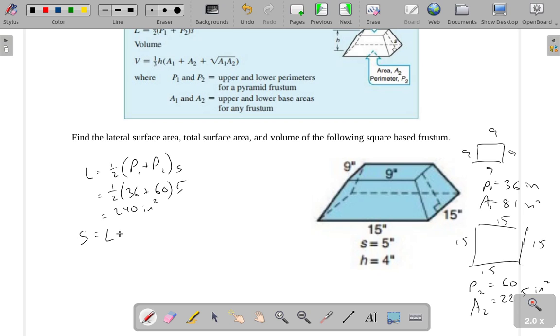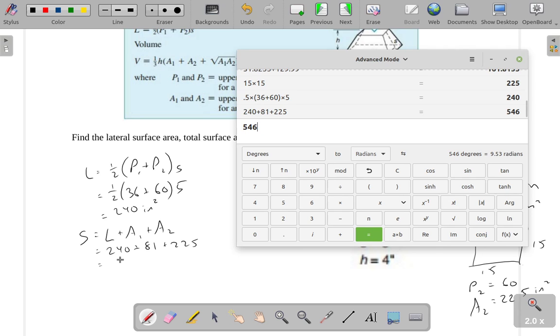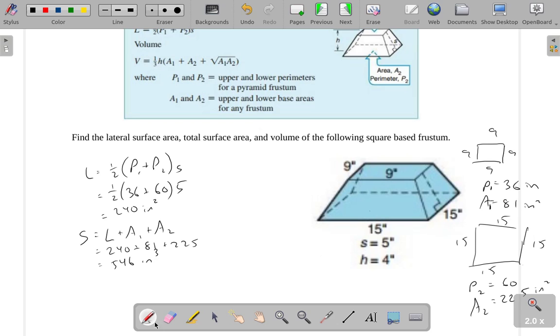All right, total surface area is going to be my lateral surface area plus, I guess I don't have the formula up there, but just kind of reasoning my way through this, I don't need a formula here. My lateral surface area is going to be the area of all my lateral faces, but then I need to add on the area of the top face and then the area of the bottom base. So L plus A1 plus A2. You don't always need formulas. You're not always going to be supplied with all of these formulas. Sometimes you have to reason your way through it. My lateral surface area plus these other two bases will give you my total surface area. So I get 240 plus 81 plus 225, which gives me 546 square inches.